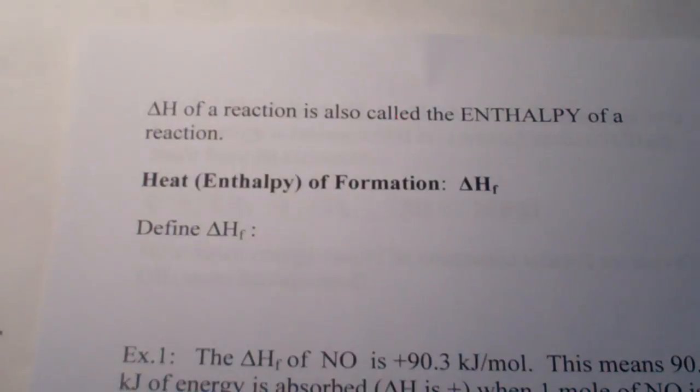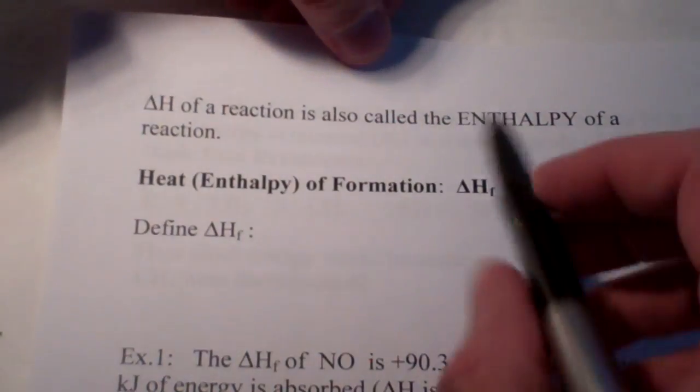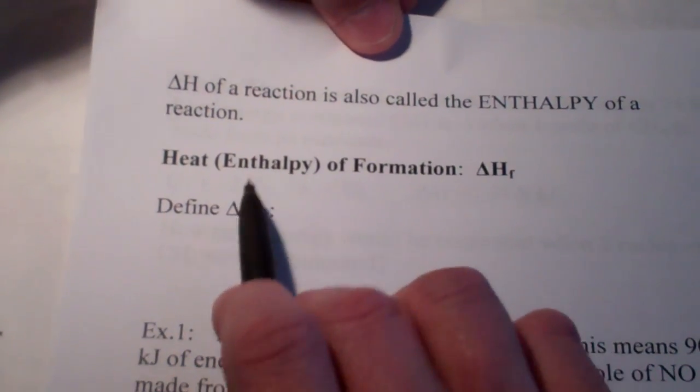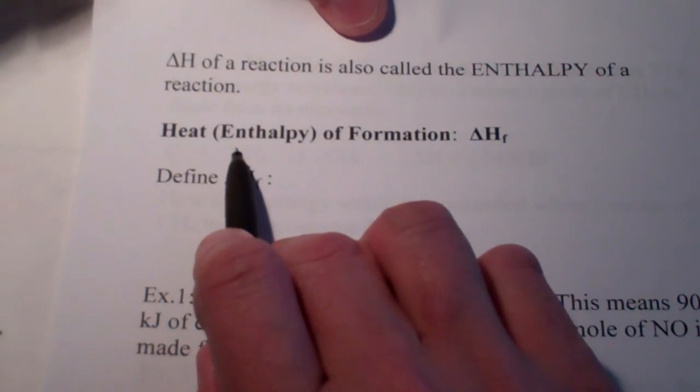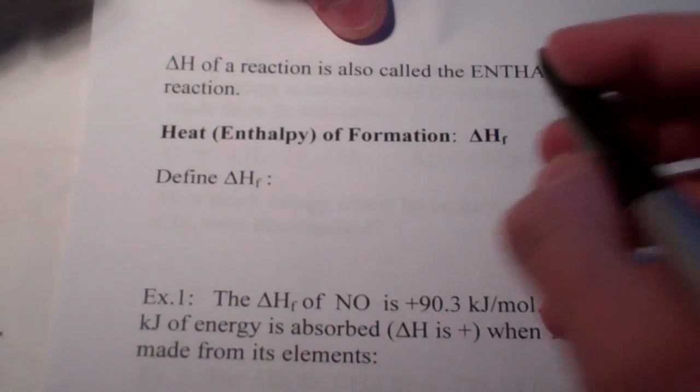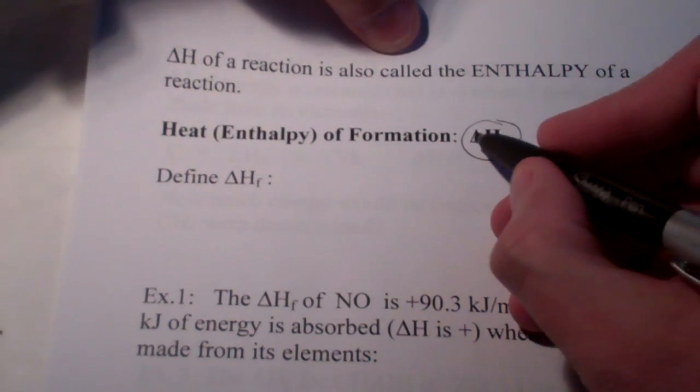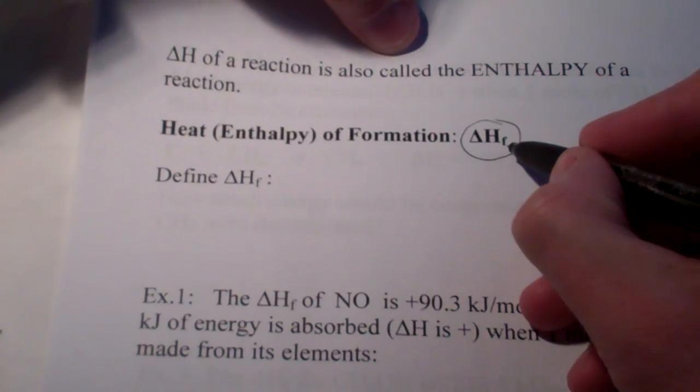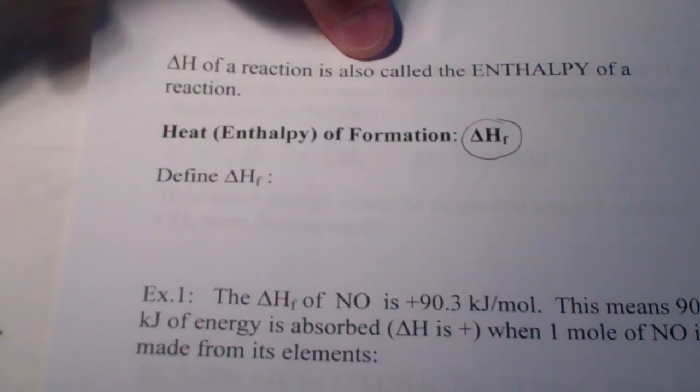Now, the delta H of a reaction is also called the enthalpy of a reaction. So, let's talk about something called enthalpy of formation. Here's its symbol, delta H sub F. The F stands for formation. Let's define it first.